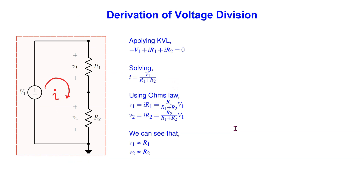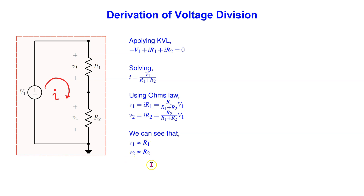The voltage division principle applies to resistors connected in series. In such circuits, the voltage drop across any resistor is proportional to the magnitude of the resistor. Consider two resistors in series, R1 and R2, connected to a voltage source V1 as shown. Using passive sign convention, we can apply Kirchhoff's voltage law to this circuit and write the circuit equation. We can solve this equation to find the current, and then using Ohm's law, we can find the voltage drops across the two resistors. These equations show that the voltage drop across R1 is proportional to R1, and V2 is proportional to R2.